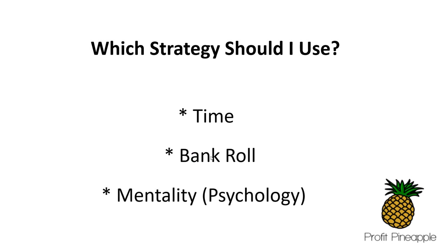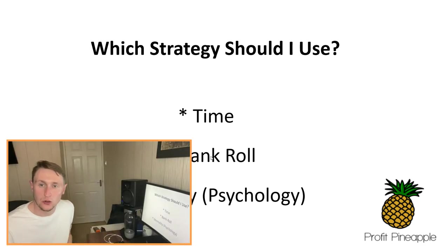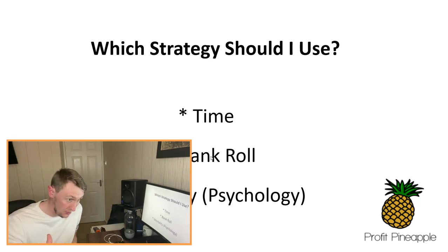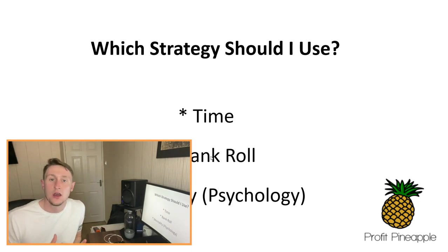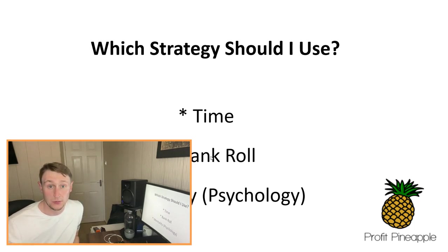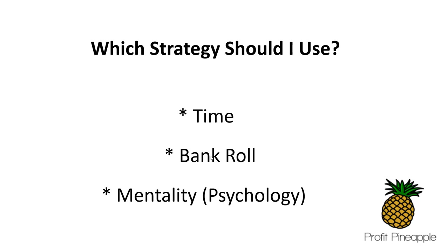Number three is mentality and psychology. Can you handle the high variance strategy - continuously losing money over and over again? Will you be able to handle the fact that you will be profitable long term but in the short term you're going to be losing lots of money? If that might be too difficult mentally, do strategy one - it takes longer but it's highly efficient in the short term, pretty much hitting the EV of each offer every time, profiting on the vast majority of offers.